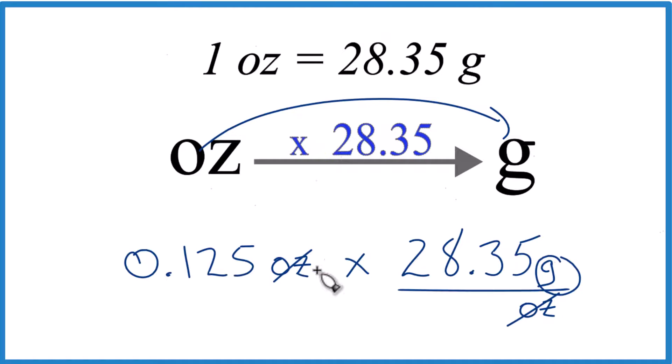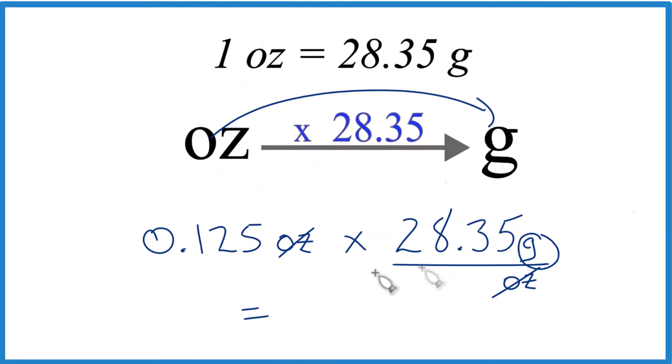So 0.125 times 28.35 equals 3.54375. Let's call it 3.54 grams because that's about as far as your balance probably goes.